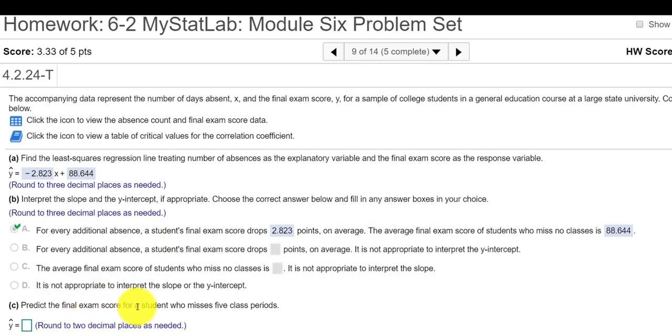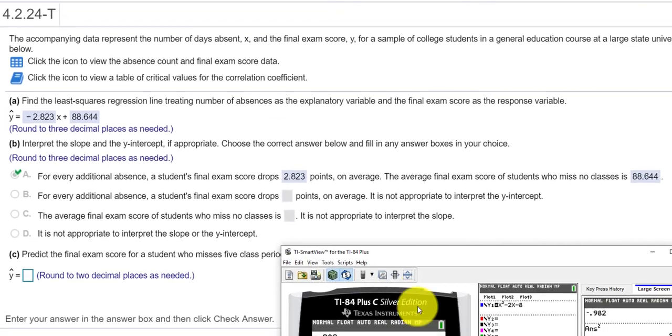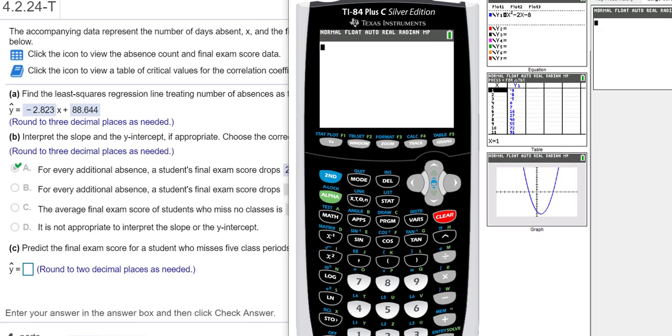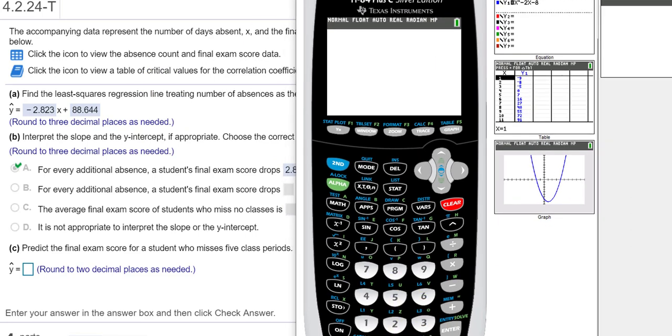Next, can you predict the final exam score for a student who misses five class periods? So if we take out our calculator and we use the equation. You see what I did here, I just took our equation and I replaced the x with five classes. So if I said what's the score for someone who misses ten classes, I'd put in a ten here. Or three classes, I'd put in a three here. But the question does ask five classes. So I place a five in for x.